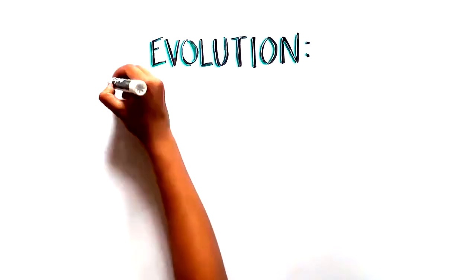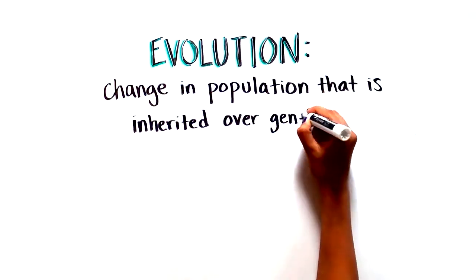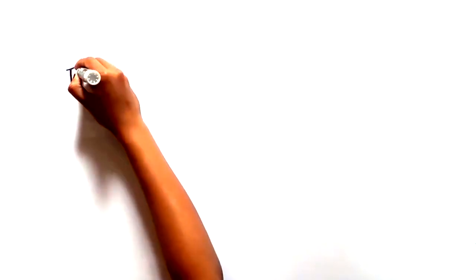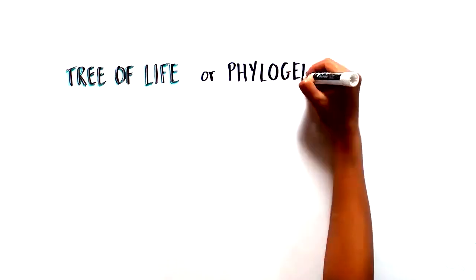Evolution refers to the change in a population that is inherited over generations. To understand that, we can start with a depiction of the tree of life, also called the phylogenetic tree.